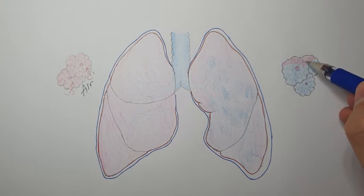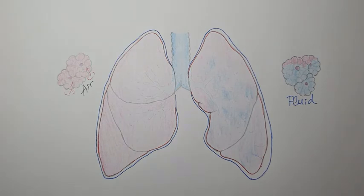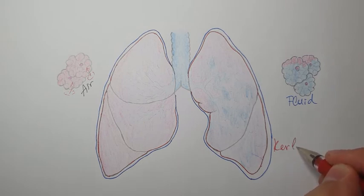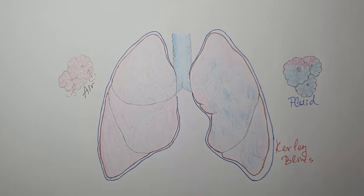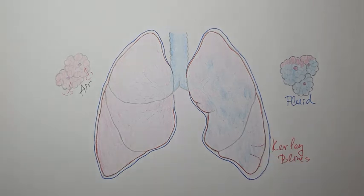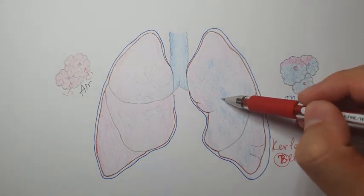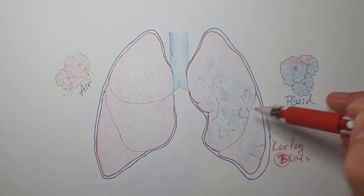As a result, the alveoli are no longer filled with air but with fluid. One of the first signs of this are Kerley B lines — fine horizontal white lines seen at the lung bases as the septa between lung tissue become edematous. Other characteristic findings include patchy whitish opacities in the lungs and hilar enlargement, all associated with pulmonary edema.